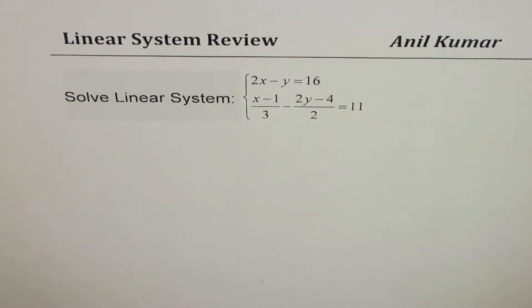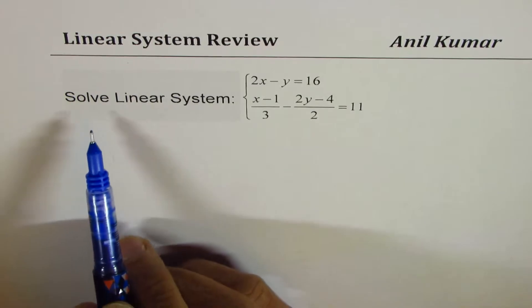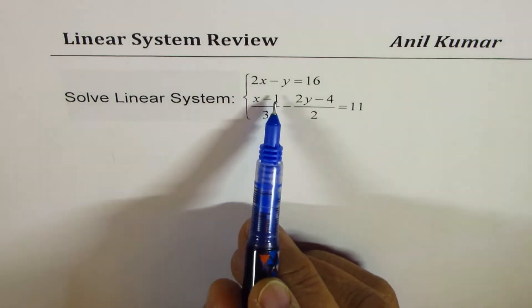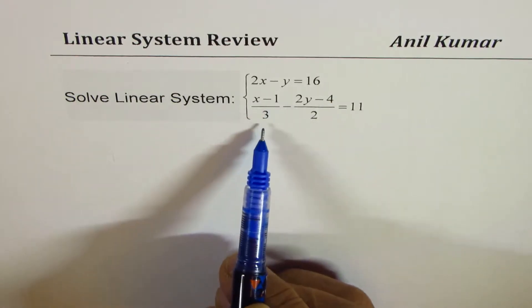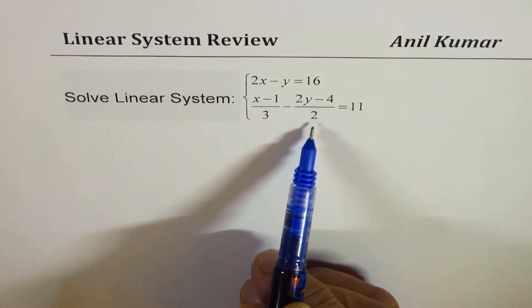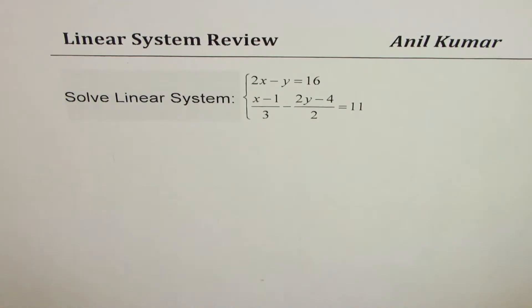I am Anil Kumar sharing with you solution of a question from my grade 10 IB student. The question here is solve linear system 2x minus y equals 16 and the second equation is x minus 1 over 3 minus 2y minus 4 over 2 equals 11.